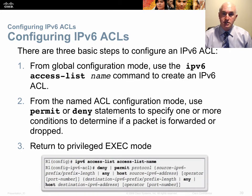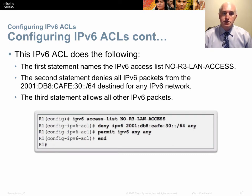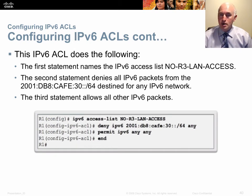From global config mode, type 'ipv6 access-list' and then the name — almost identical to IPv4. That takes you to the named ACL sub-prompt where you enter statements starting with permit, deny, or remark, just like IPv4. Notice the use of slash-prefix notation like /64 instead of a wildcard mask. You can specify source and destination, and optionally use 'deny tcp' with a port number.